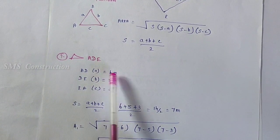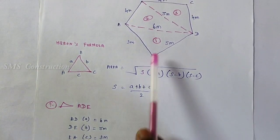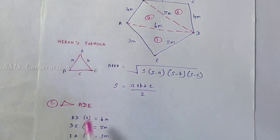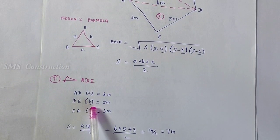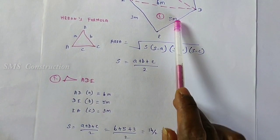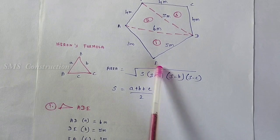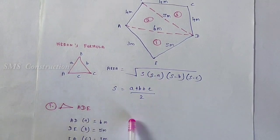A-D is small a: 6 meters. D-E is small b: 5 meters. A-E is small c: 3 meters.